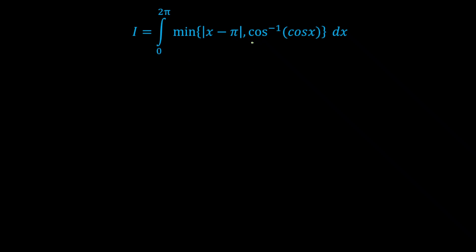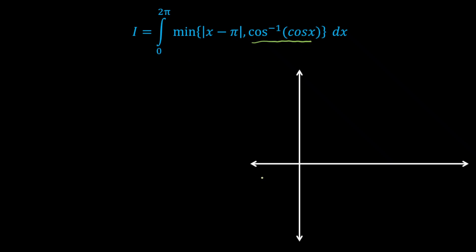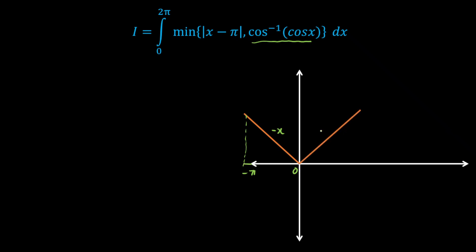Let's start with the graph of cos⁻¹(cos x). This is our x-axis, this is our y-axis. I am going to get the branch that gives x when x is from 0 to π, because the range of cos⁻¹ has a maximum of π, so the inside value x must be from 0 to π for this branch.